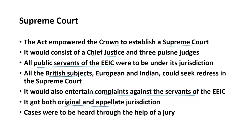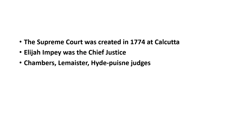The Supreme Court had both original and appellate jurisdiction. Original jurisdiction means the case originates in this court; appellate means appeals from subordinate courts. The Supreme Court was created in Kolkata in 1774. Elijah Impey was the first Chief Justice. The remaining judges — Chambers, Lemaistre, and Hyde — were the brother judges appointed to the Supreme Court at Kolkata.